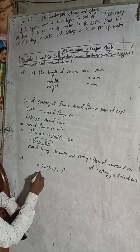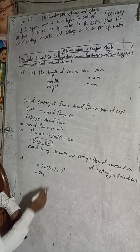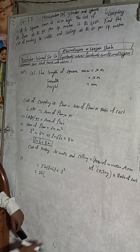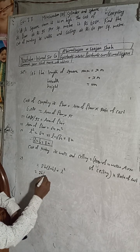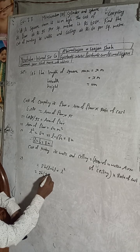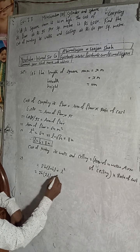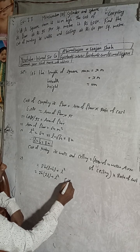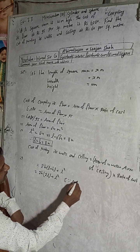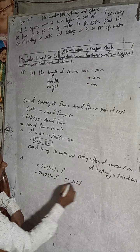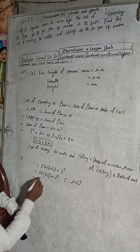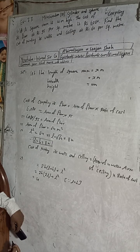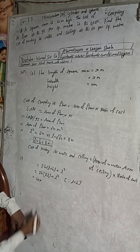Area of walls = 2H(L + B). Since length and breadth are the same (both 8 m), L + B = L + L = 2L. So area of walls = 2H × 2L. Substituting H = 4 and L = 8: area of walls = 2 × 4 × (8 + 8).